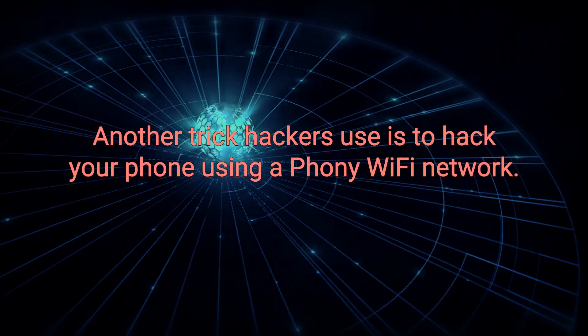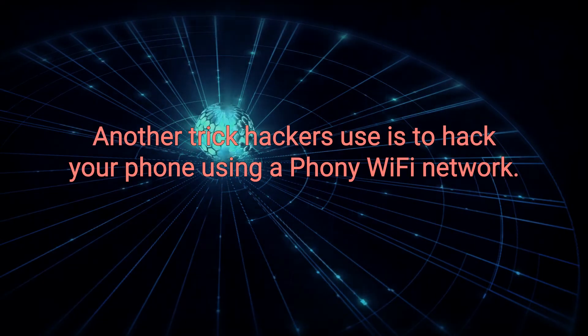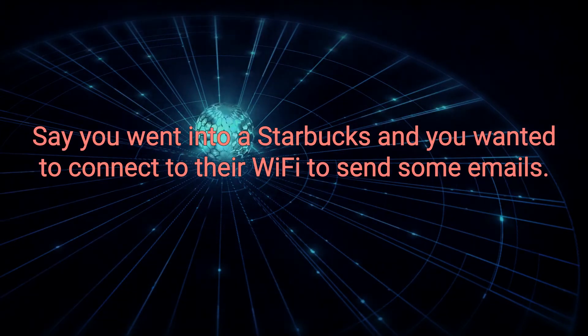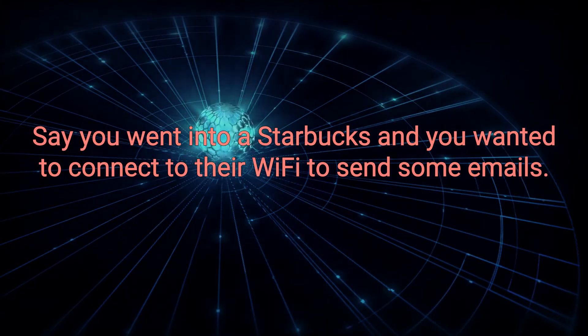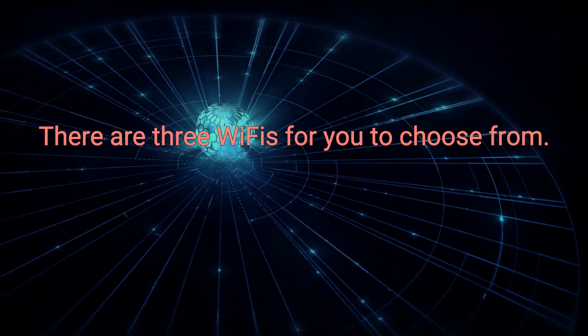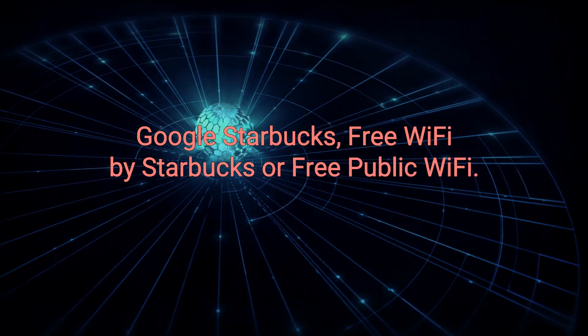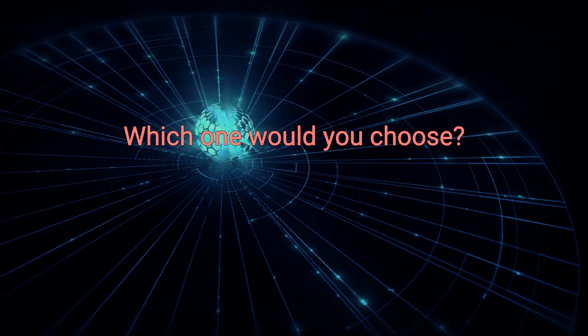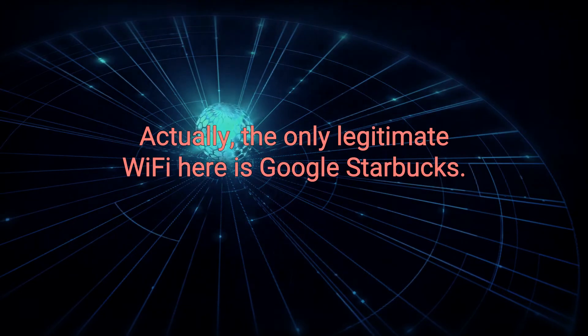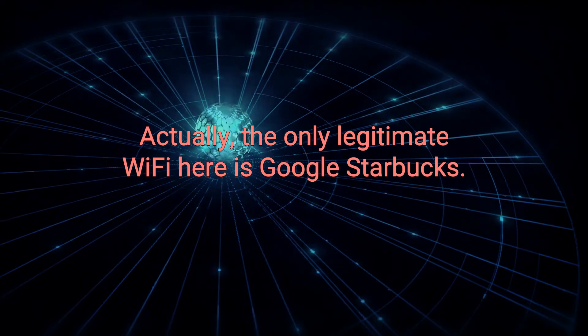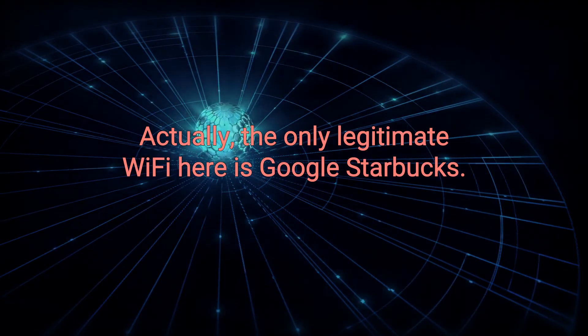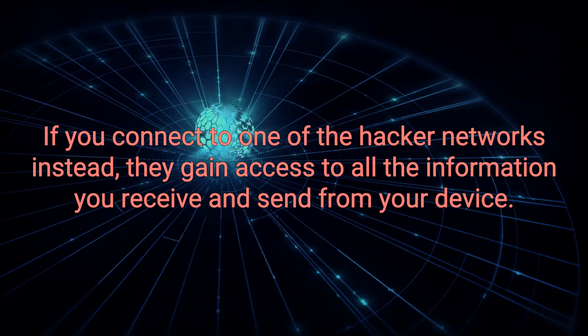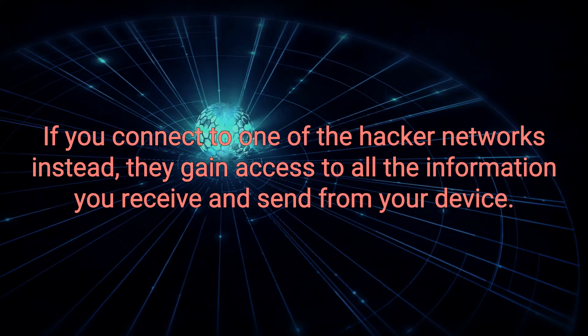Another trick hackers use is to hack your phone using a phony Wi-Fi network. Say you went into a Starbucks and you wanted to connect to their Wi-Fi to send some emails. There are three Wi-Fis for you to choose from. Google Starbucks, free Wi-Fi by Starbucks, or free public Wi-Fi. Which one would you choose? Actually, the only legitimate Wi-Fi here is Google Starbucks. If you connect to one of the hacker networks instead, they gain access to all the information you receive and send from your device.